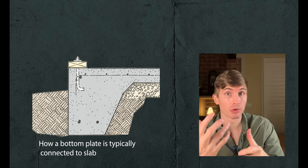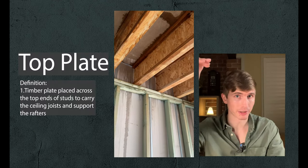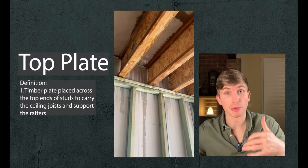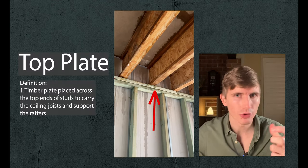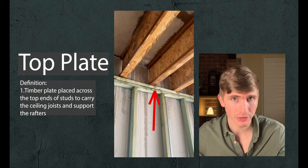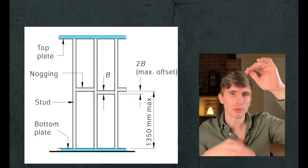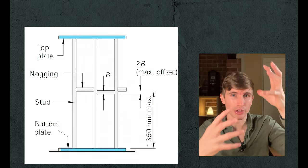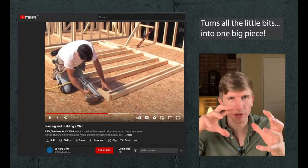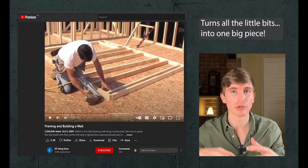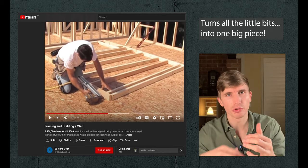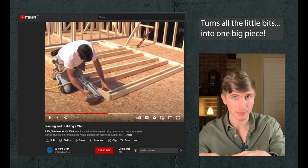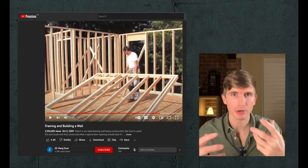We've got the bottom plate but we've also got a top plate. Top plates are typically doubled up for strength, which are also known as double plates. Adding top and bottom plates to the stud turns all the individual pieces into a rigid unit. This allows the walls to be built laying down, then stood up and put into place.